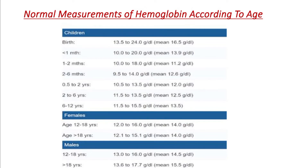For infants around one month, the range is 10 to 20 gram per dL, with an average of 13.9 gram per dL. For one to two months, the average or mean is 12.9 gram per dL.